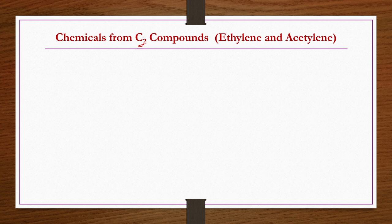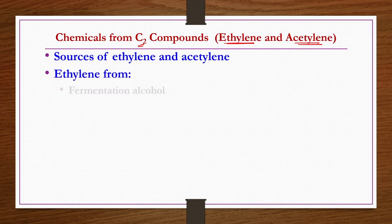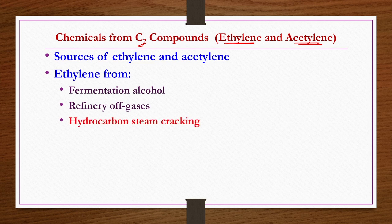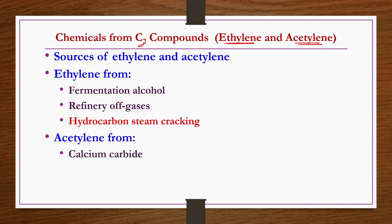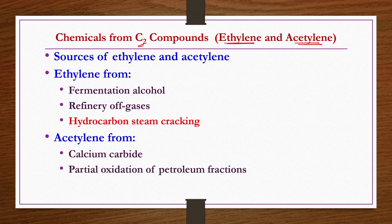The C2 compounds considered in this lecture are ethylene and acetylene. Sources of ethylene include fermentation alcohol, refinery gases, and hydrocarbon steam cracking. Acetylene can be obtained from the calcium carbide process, partial oxidation of petroleum fractions, and hydrocarbon steam cracking. We will discuss the hydrocarbon steam cracking process, which is common to both products.